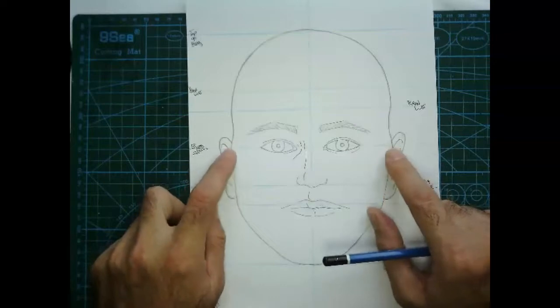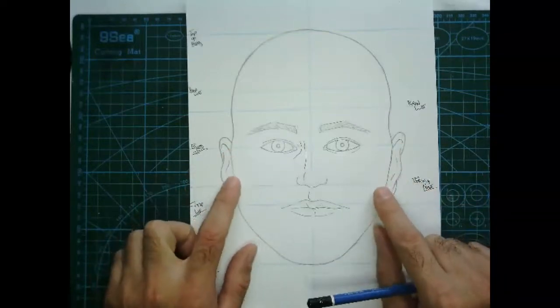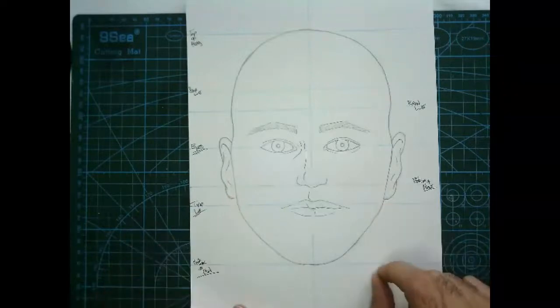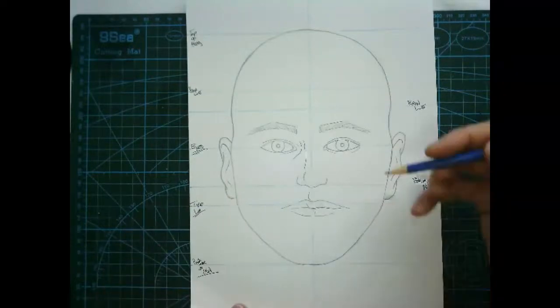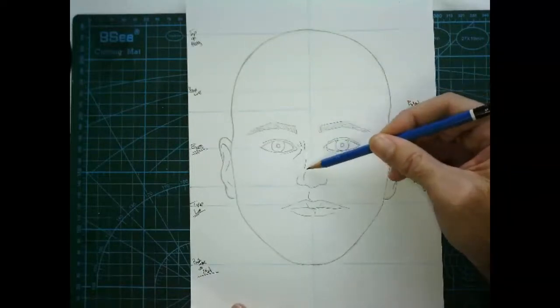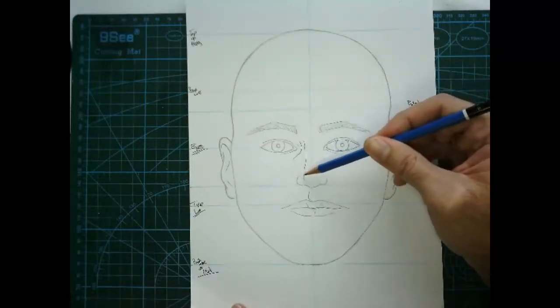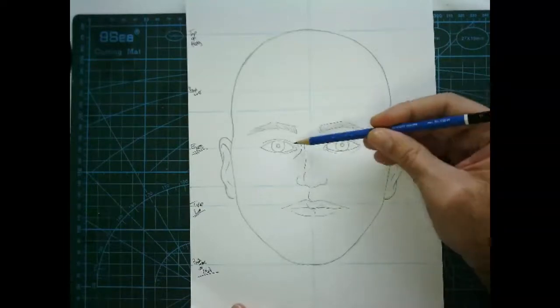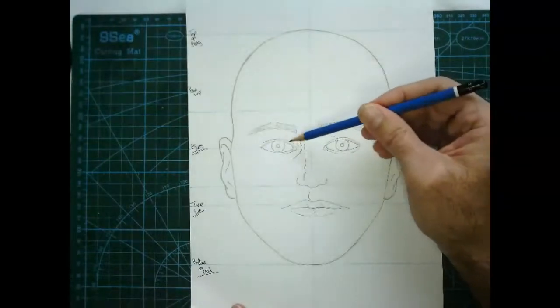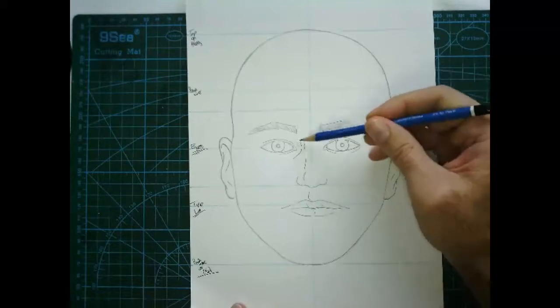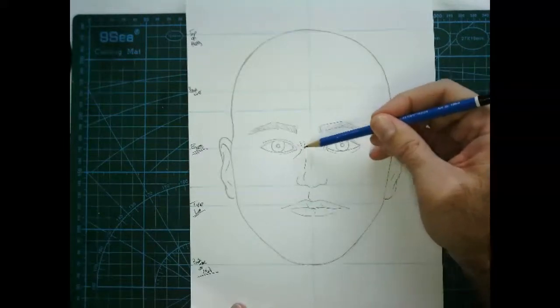I've added a few more lines for definition, showing the structure: the nose, the bridge of the nose, the tip of the nose. I've lightly erased some of those construction circles. The eyes—I've given definition to the eyelids, upper and lower, a little more detail around the tear duct and that interior socket as well.